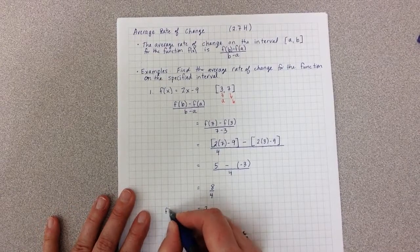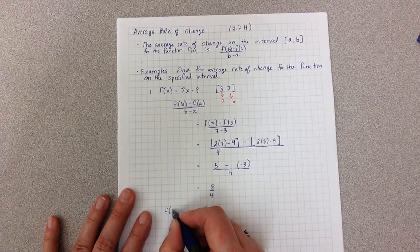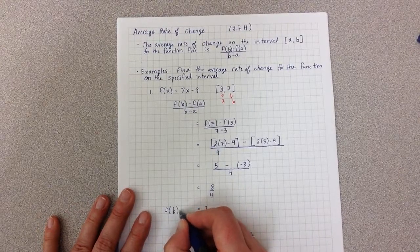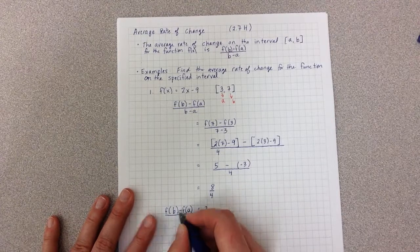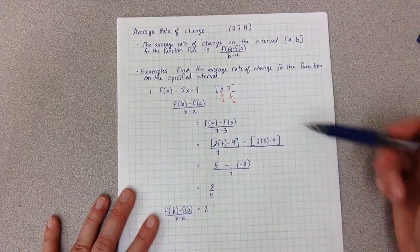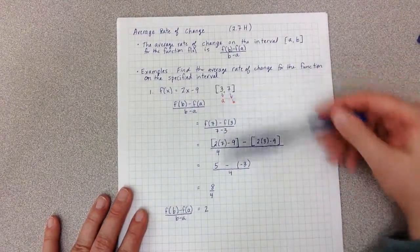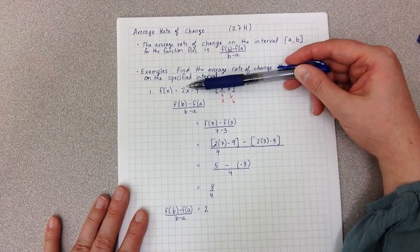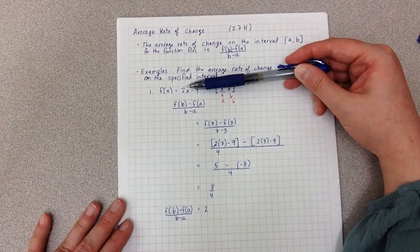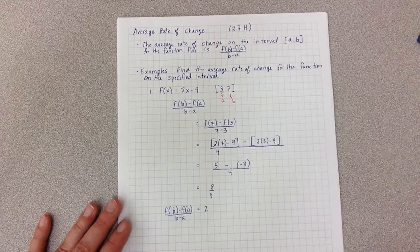And then we'll say that our average rate of change is 2. And you'll notice that for the linear, the average rate of change is exactly the slope. It is what you see and what you think about as the slope.